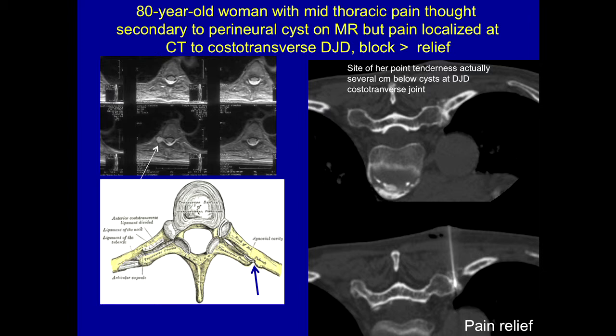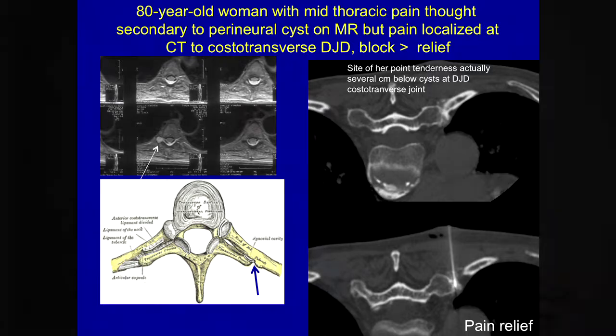We looked at where the BB was and found a degenerative costovertebral/costotransverse joint. We put a needle down there, injected it, and the pain went away — a great example of how integrating history and physical exam with imaging leads to the right target.